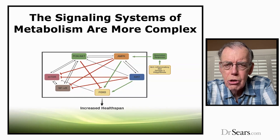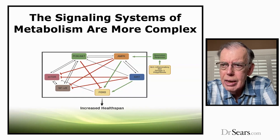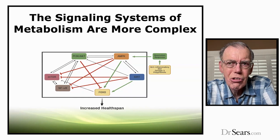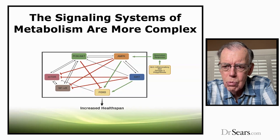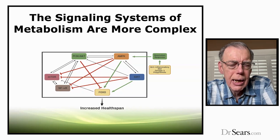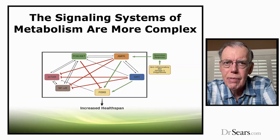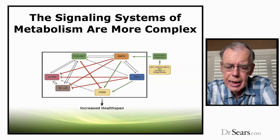No drug can do this. But your diet can orchestrate this complex signaling system to maintain wellness. And the key to that is the master switch of metabolism in each of your 37 trillion cells, known as AMPK.